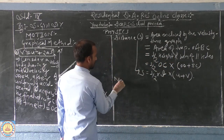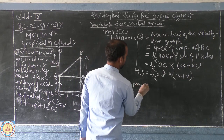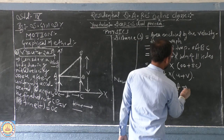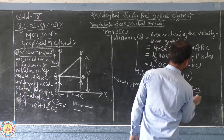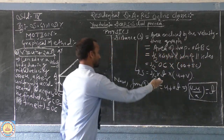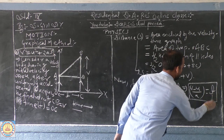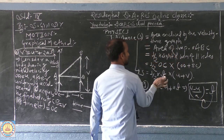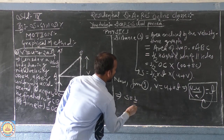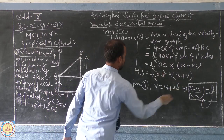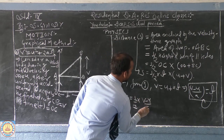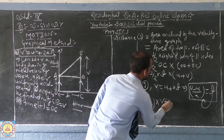From the first equation of motion, v = u + at, which gives t = (v − u) / a. We substitute this value of t into our expression for s, giving s = ½ × (v − u)/a × (v + u).